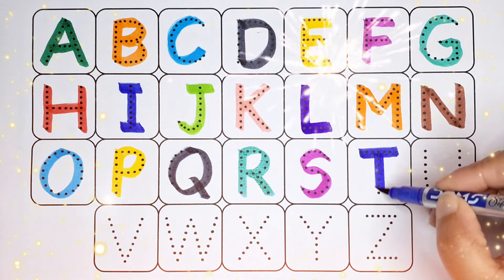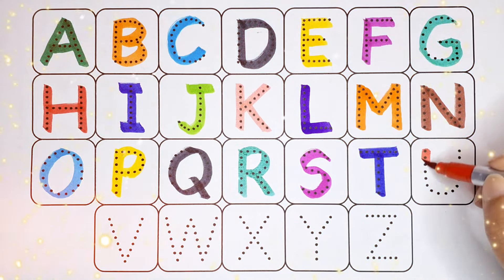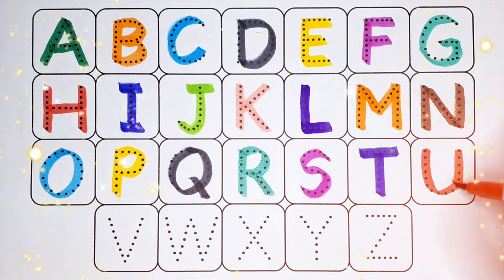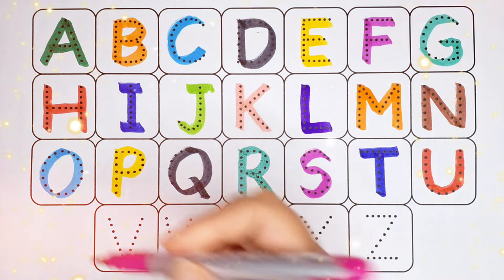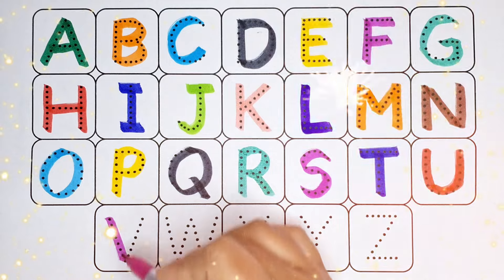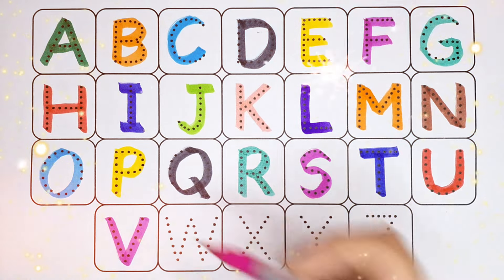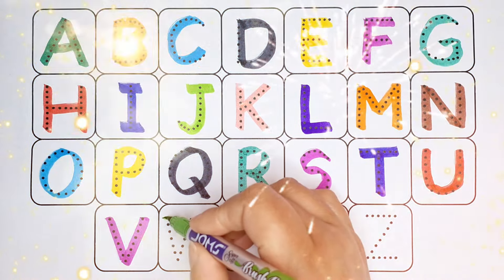Blue color T, T for tomato. Red color U, U for universe. Pink color V, V for vulture.